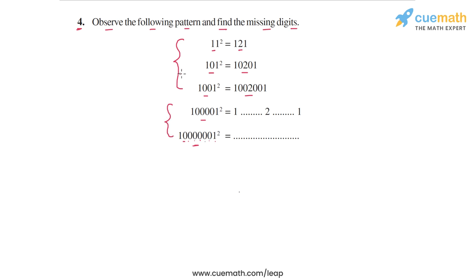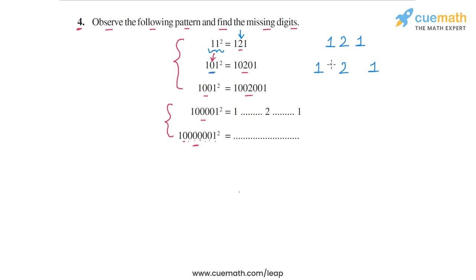Let's look at the first three squares and spot the pattern. 11² = 121 — the square starts with 1, ends with 1, and there is a 2 in the middle. Then 101² again has 1 at the beginning and 1 at the end, with a 2 in the middle. But because there is a 0 in 101, in the square we have zeros appearing, giving us 10201.